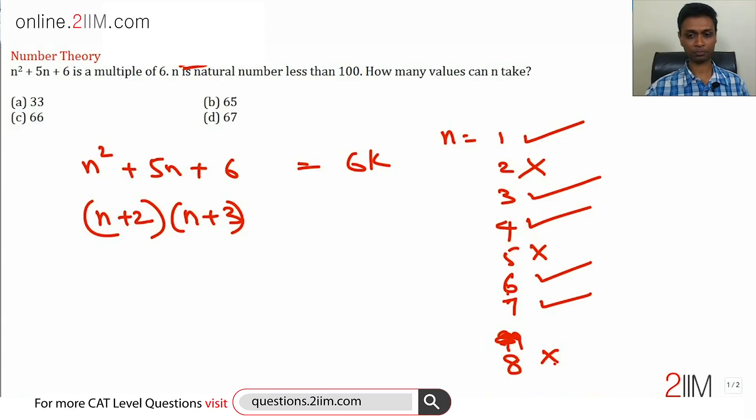When n is 7, 9 into 10, that works. When n is 8, it becomes 10 into 11, it does not work, and so on. Think about this: it works for 1, does not work for 2, 3 and 4 it works, 5 it does not work, 6 and 7 it works, 8 it does not work. So two numbers it works for, one number it does not work, that's how it goes.